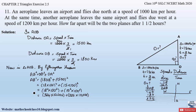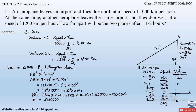So AB² = 324 × 10,000 + 225 × 10,000. Adding 324 and 225: 4 plus 5 is 9, 2 plus 2 is 4, 3 plus 2 is 5, giving 549. So AB² = 5,490,000. Now taking square root on both sides — the square and square root cancel — we need to find the square root of 5,490,000. We can split this as 549 × 10,000.